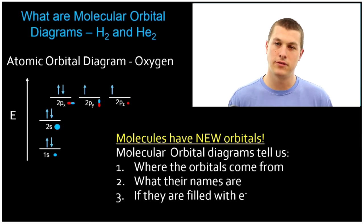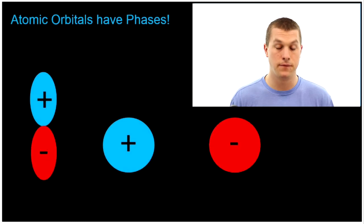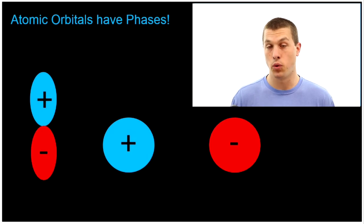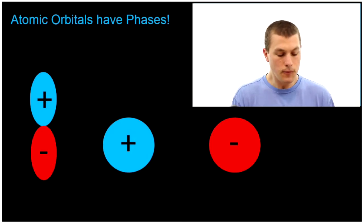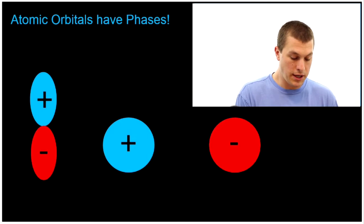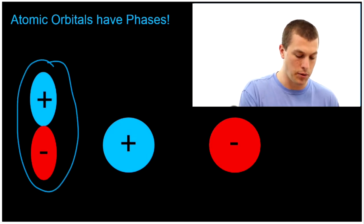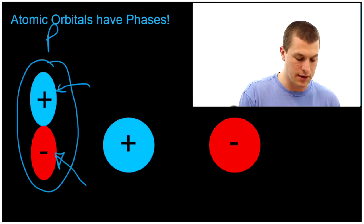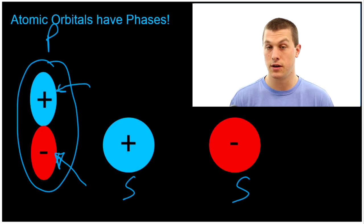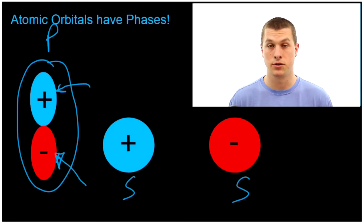Before you can do that, you have to understand something about atomic orbitals that's lots of times glossed over in general chemistry — and that is that atomic orbitals have phases. They can be positive or negative, much like the sine function has portions below the x-axis and portions above. This is a p orbital, and the top portion here has a positive phase, and the bottom portion has a negative phase. These two s orbitals — one has a negative phase throughout, and one has a positive phase throughout. When I combine those, they can constructively or destructively interfere, much like waves of water or waves of light.